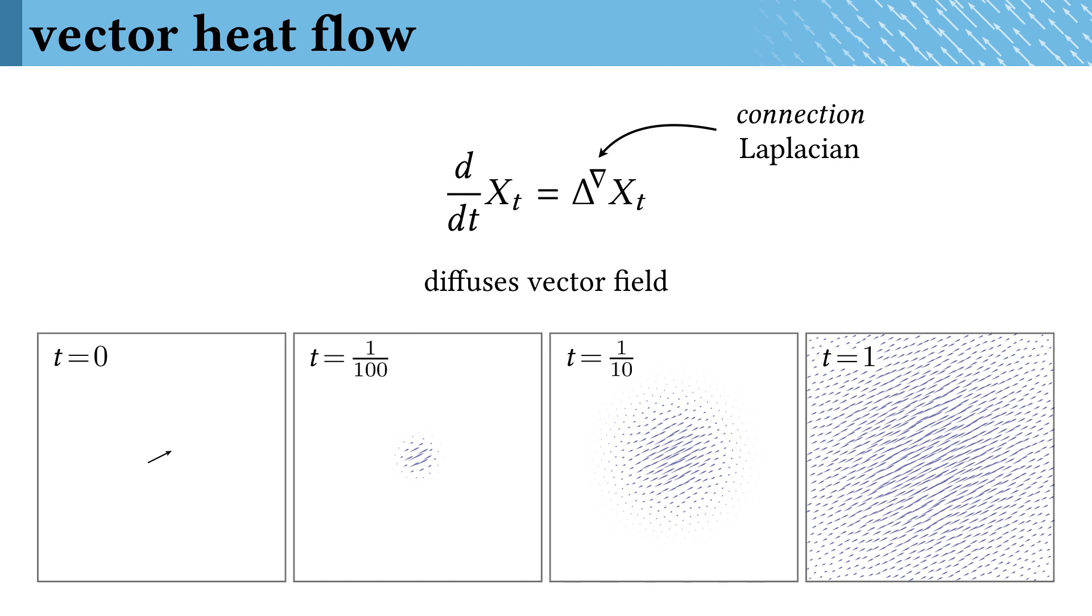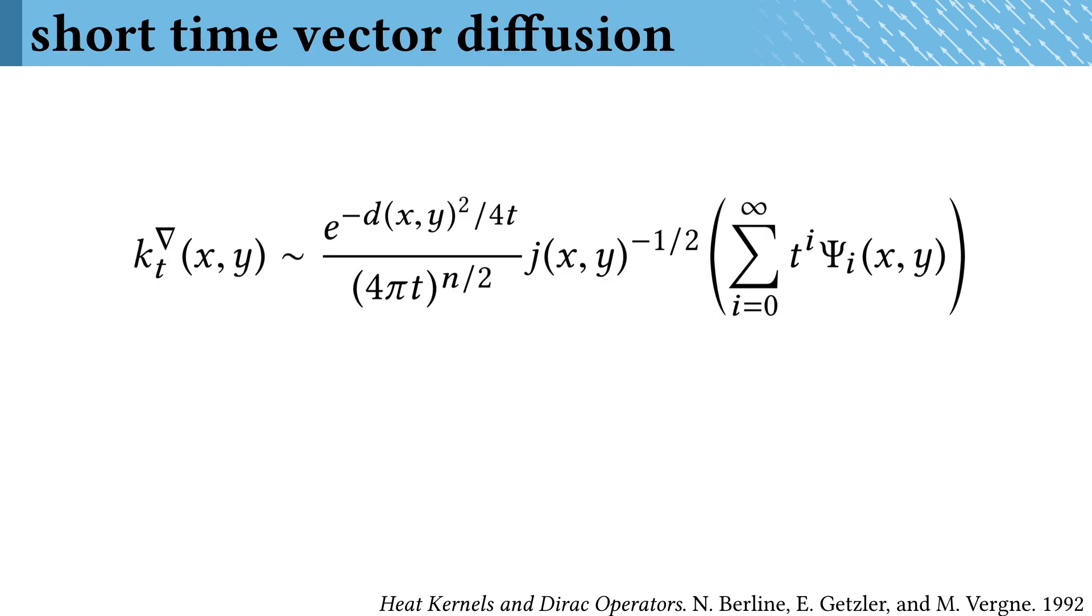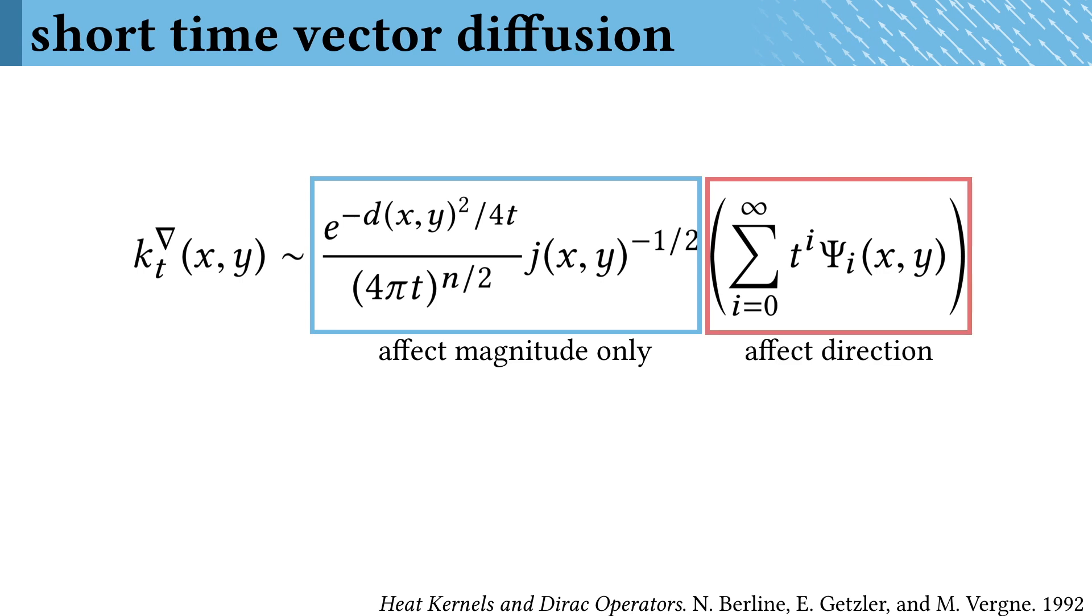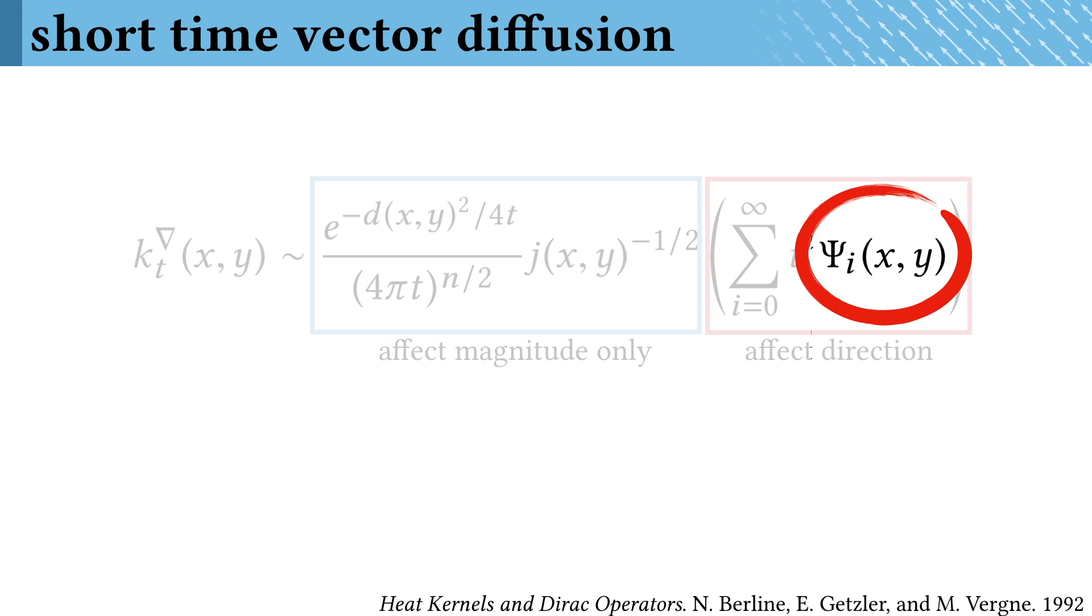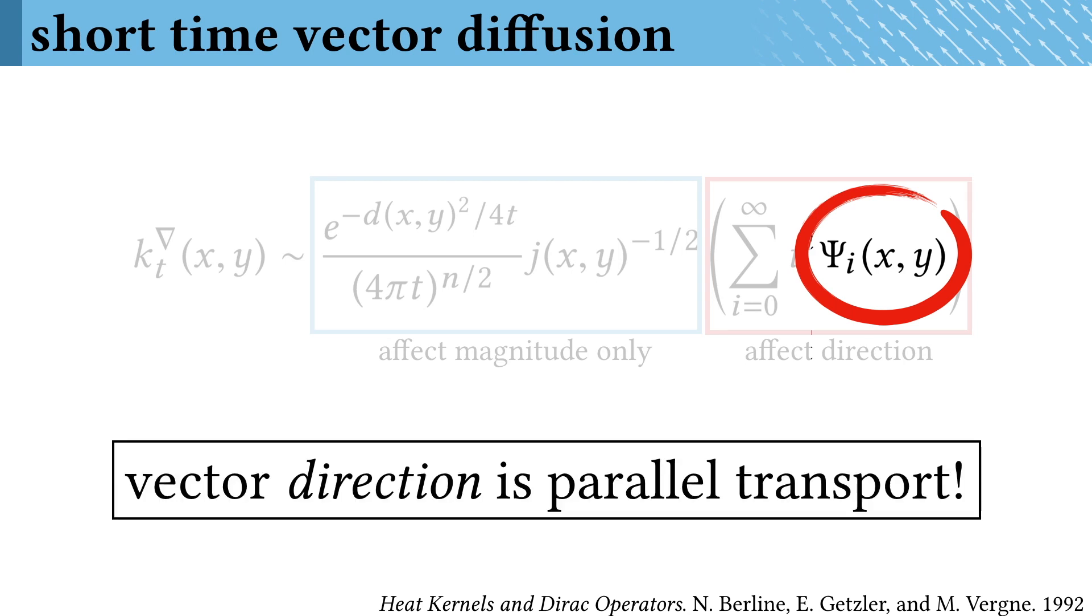This diffusion turns out to have a pretty remarkable property, which is the core of our technique. If you dig up the heat kernel expansion for the connection Laplacian, it's got a lot going on. But all these terms only affect the magnitude of the result, while the direction is entirely determined by these terms. And over a short time, it turns out that the dominant contribution to the direction is exactly the parallel transport.